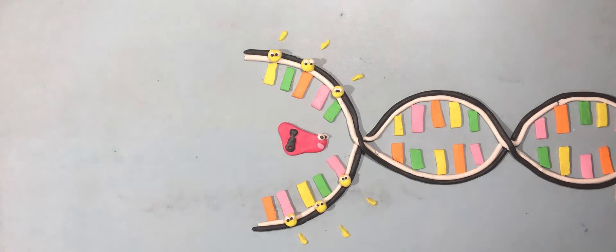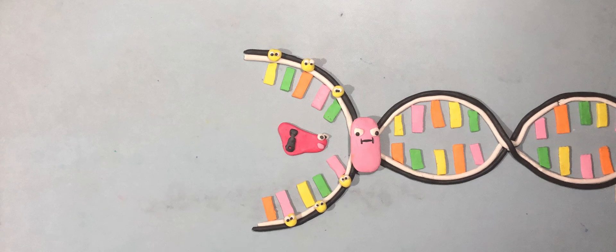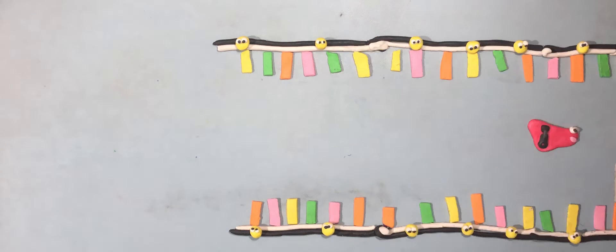Single-stranded binding protein binds to the single-stranded region to protect it from breakage and to prevent it from renaturing. As the parental DNA is unwound by DNA helicase and SSB, the resulting positive supercoiling or torsional stress is relieved by topoisomerase or DNA gyrase by inducing transient single-stranded breaks.